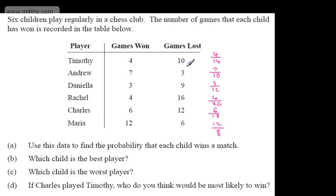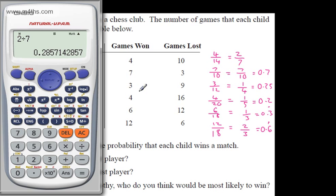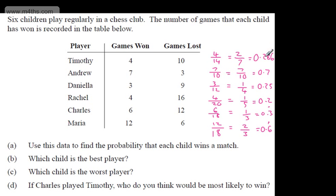Often it's easier to compare these as decimals. Simplifying: Timothy is 2 over 7, Andrew is 7 tenths, Daniela is 1 quarter, Rachel is 1 fifth, Charles is 1 third, and Maria is 2 thirds. As decimals: Timothy is approximately 0.286, Andrew is 0.7, Daniela is 0.25, Rachel is 0.2, Charles is 0.3 recurring, and Maria is 0.6 recurring.